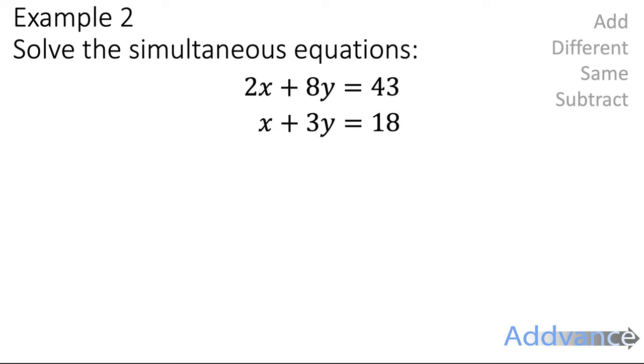But what we can do is multiply this equation, the second equation, by 2, and that would get us a 2x. So you're going to multiply everything in that equation by 2, and we get 2x plus 6y equals 36. Look at what I did. I multiplied the entire second equation by 2. The x times 2, the 3y times 2, and the 18 times 2, and I got this new equation. And the reason I did that is because now I can cancel out the 2x and the 2x.